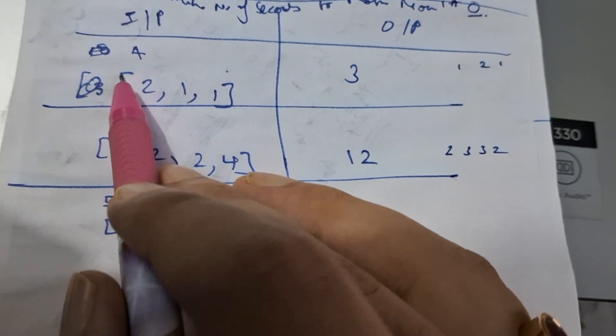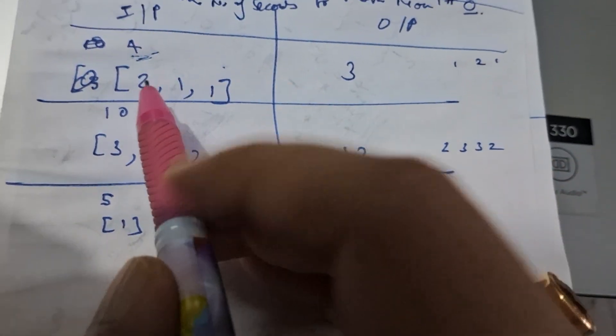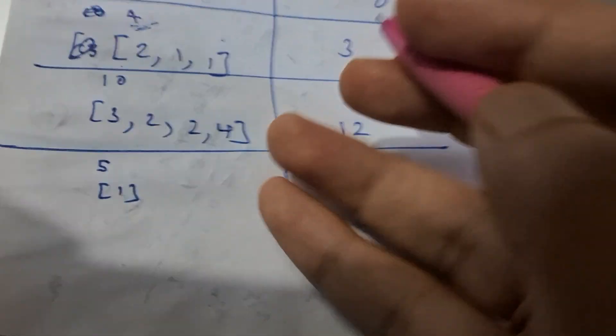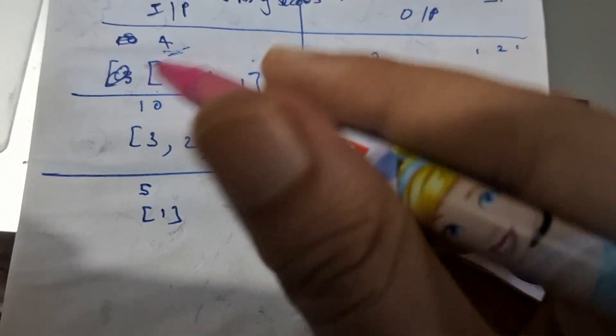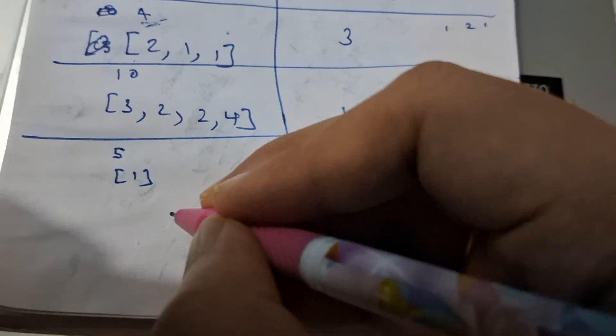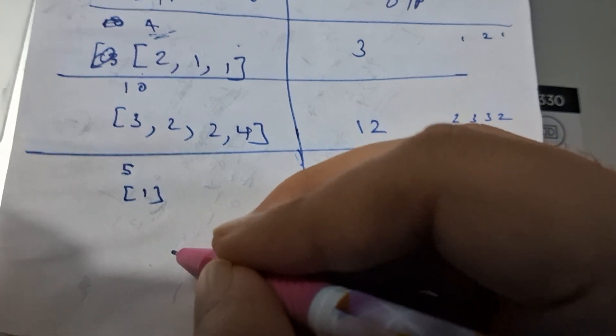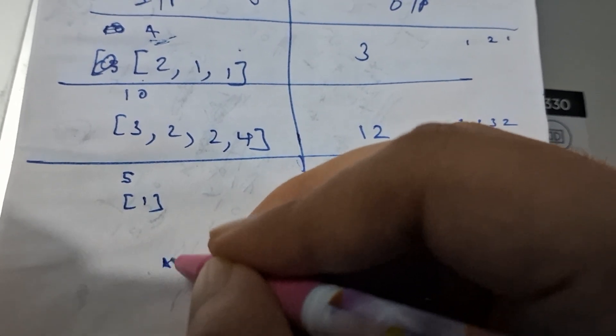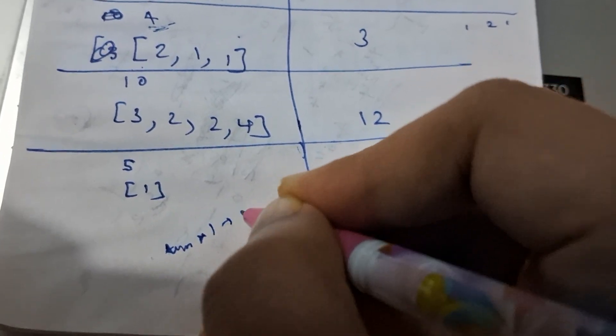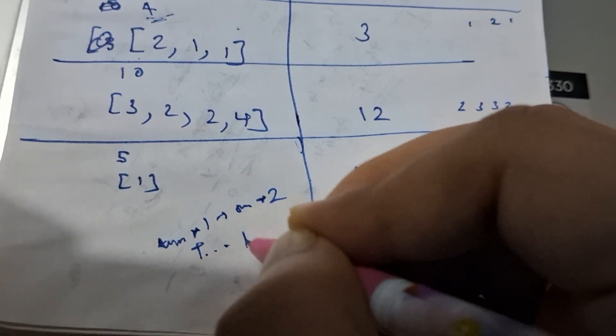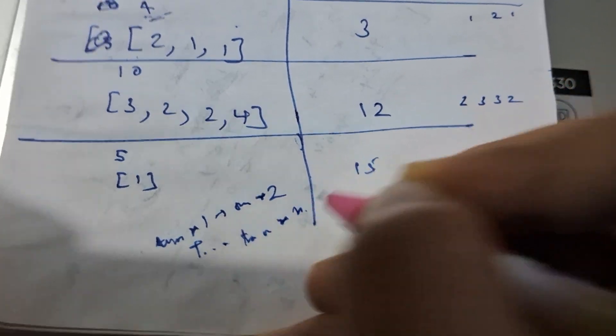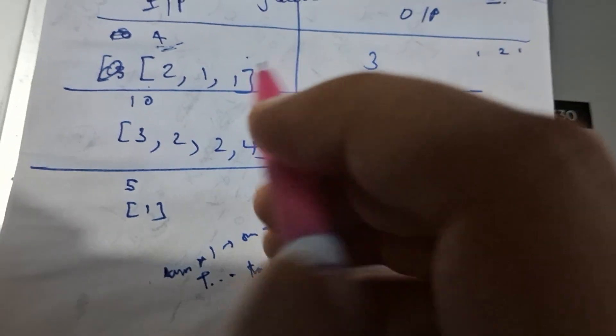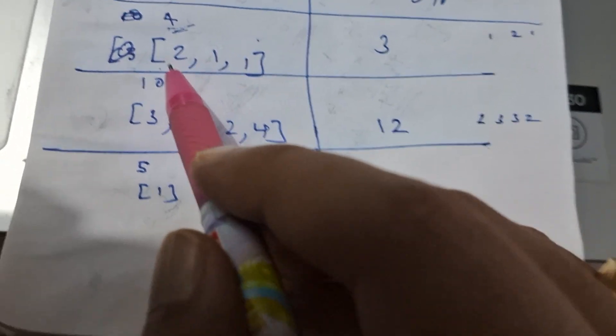You're given the height of a mountain and an array of worker times. If a worker reduces the height by x amount, the time he takes is time * 1 + time * 2 + ... + time * x. So if he's demolishing the mountain by x height, the time calculation is based on this formula.